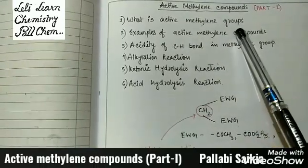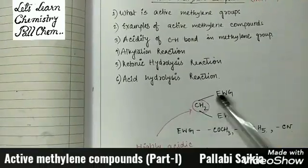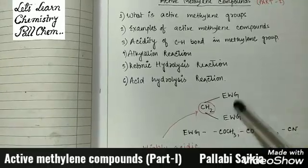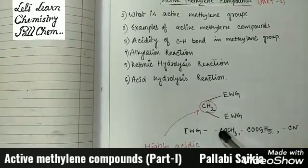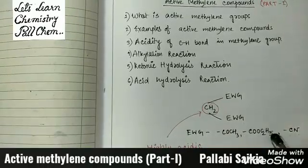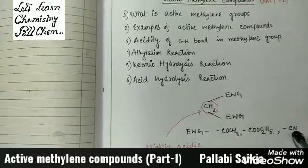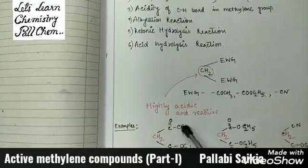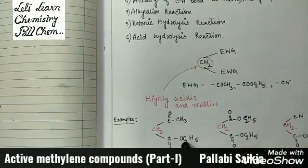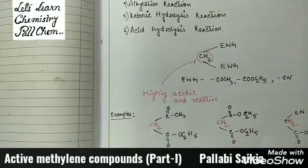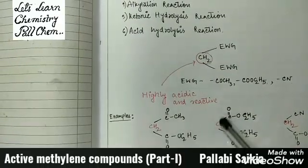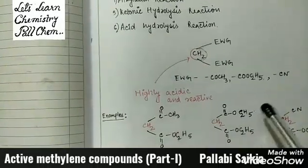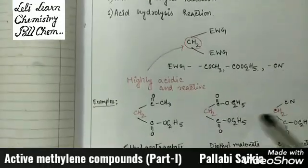An active methylene group is a compound where a methylene group is directly bonded with two electron withdrawing groups. These electron withdrawing groups may be COCH3, COOC2H5, any carbonyl groups, or cyanide. If the electron withdrawing groups are COCH3 and COOC2H5, then it is ethyl acetoacetate. If both groups are COOC2H5 and COOC2H5, then it is diethyl malonate.